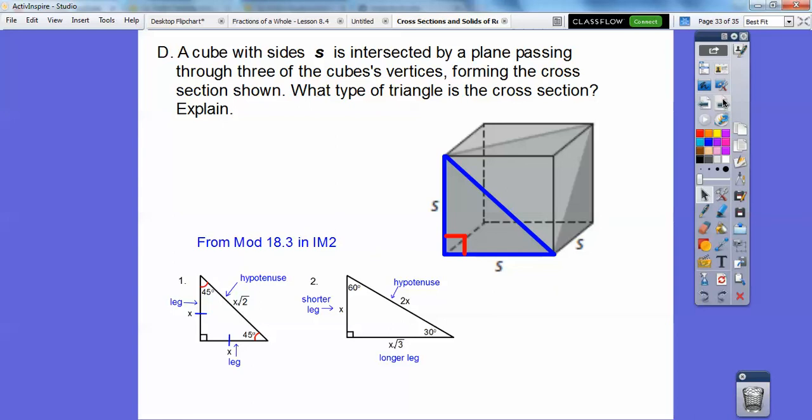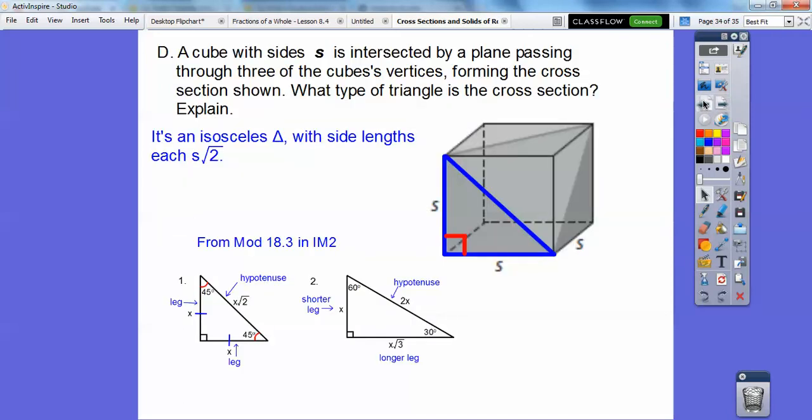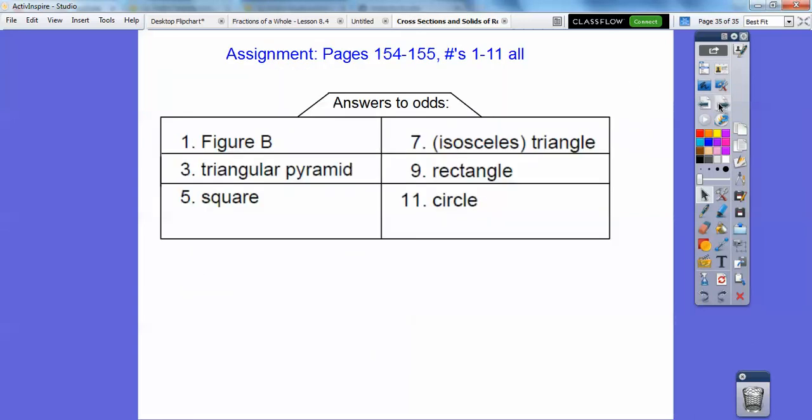It's an equilateral triangle. It's not just isosceles, it's an equilateral triangle with each side being S root 2. It actually should say, well, isosceles means at least two equal sides. Equilateral means three equal sides. So it's an isosceles triangle. Yes, it is. But it's also an equilateral triangle. Each side has S root 2. If you are in my class, that will be your assignment. Take care.